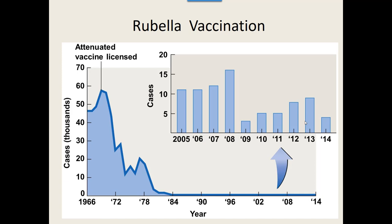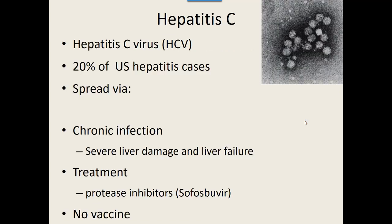Our next virus is also in the Flaviviridae group. Most in that group are spread by arthropods, but this one is not — it's another hepatitis virus: hepatitis C. Hepatitis C causes about 20% of all U.S. cases, and it is spread usually by various types of bodily fluids — by sexual activity, by sharing needles, and we also have cases spread during organ transplants. It usually has a chronic infection — an inflammation of the liver that can last for years or even decades — and can ultimately cause severe liver damage and even liver failure in about 5% of cases.